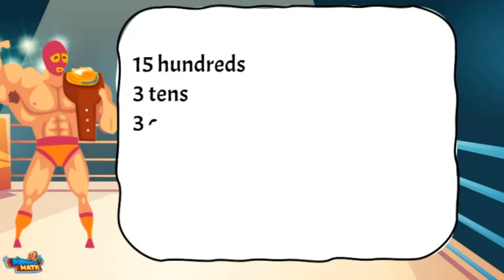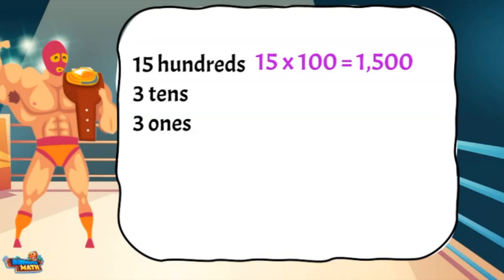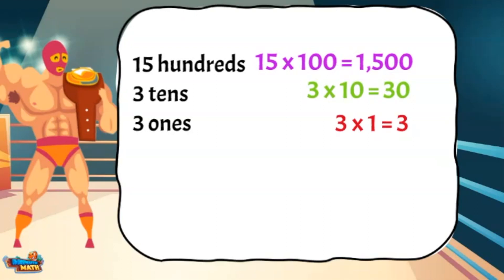The last example is in list form. If we have 15 hundreds, 3 tens, and 3 ones, I start by finding the value of each item in the list. 15 hundreds can also be represented by 15 times 100 — the value of the hundreds is 1500. To find the value of 3 tens, I multiply 3 times 10 for a total of 30. To find the value of the ones, I multiply 3 times 1 to get 3.